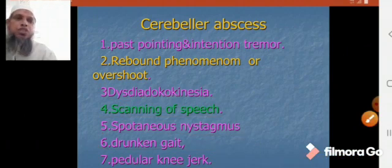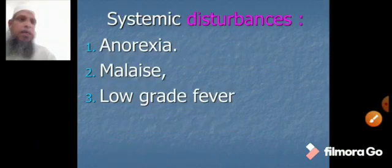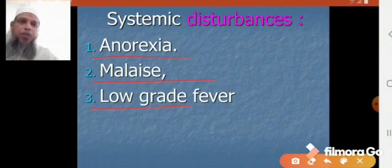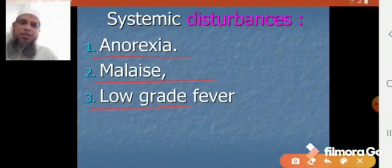Then there are systemic disturbances. Symptom number 1 is anorexia, number 2 is malaise, and number 3 is low grade fever. These three are the systemic disturbances.